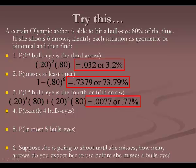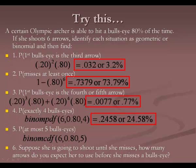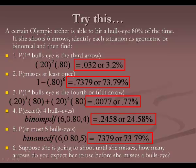Now the binomial questions for the archer. Find exactly four bullseyes in six shots: binomPDF(6, 0.8, 4) gives 24.58%. Find the probability of at most five bullseyes: binomCDF(6, 0.8, 5) — accumulating up to five — gives 73.79%.